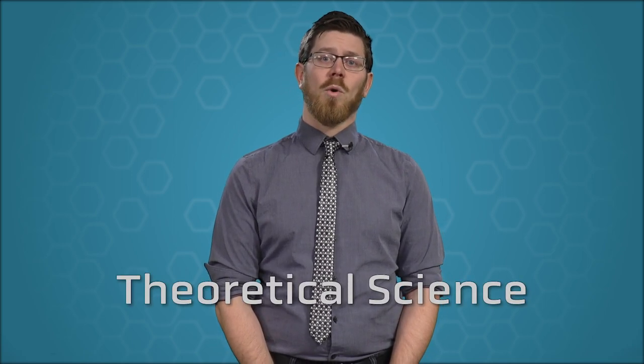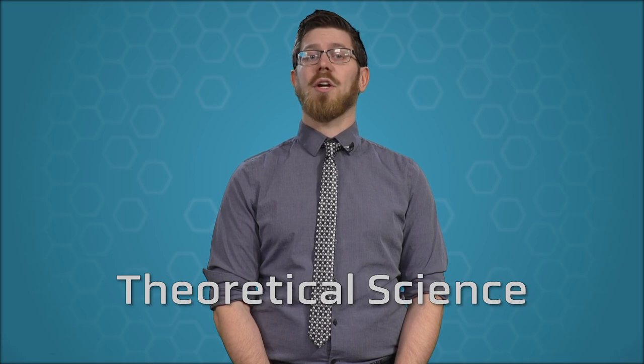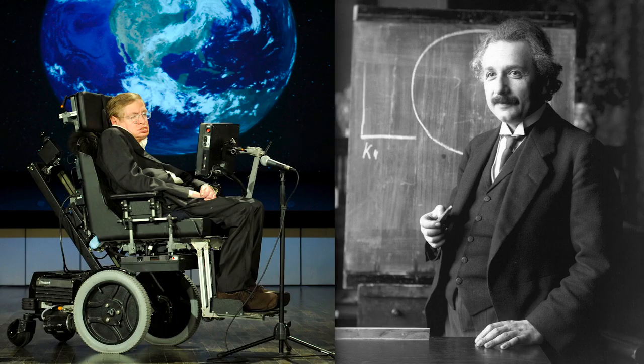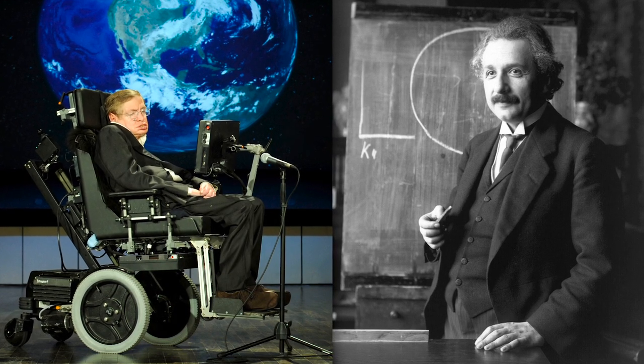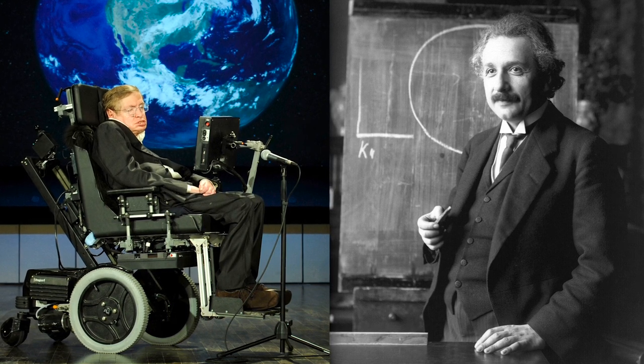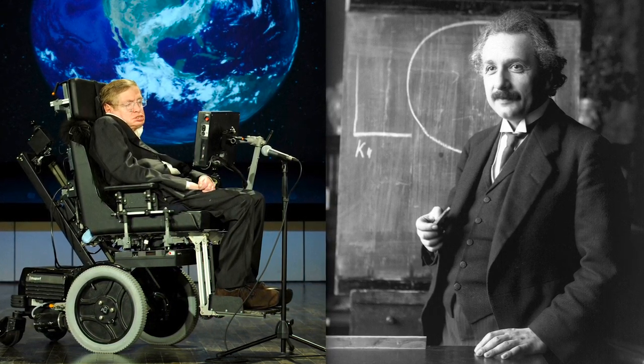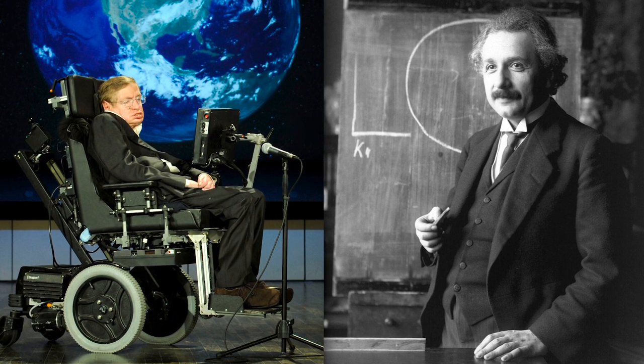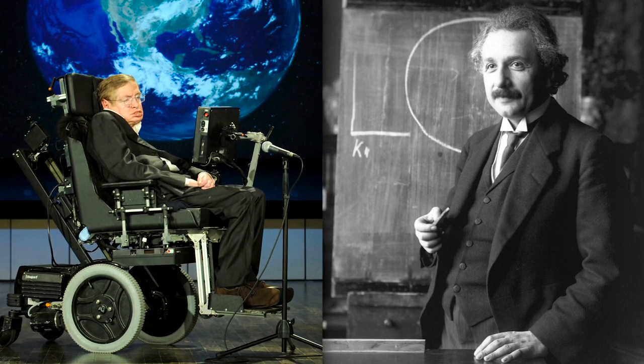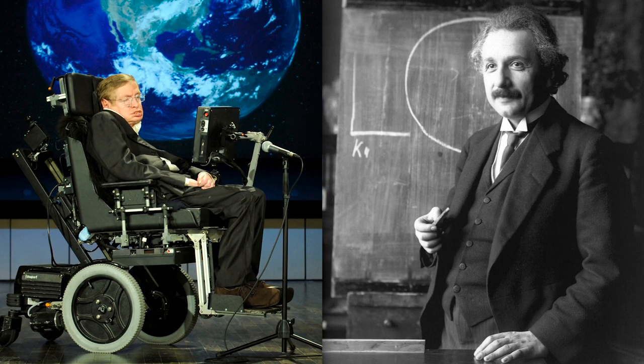Until recently, all of the scientific questions we had that we couldn't directly measure through experimentation were relegated to an area of science called theoretical science. Many of the most famous scientists, like Albert Einstein and Stephen Hawking, are theoretical scientists. For a theoretical scientist, their laboratory is their mind, and it can be difficult for other people to see their experiments.